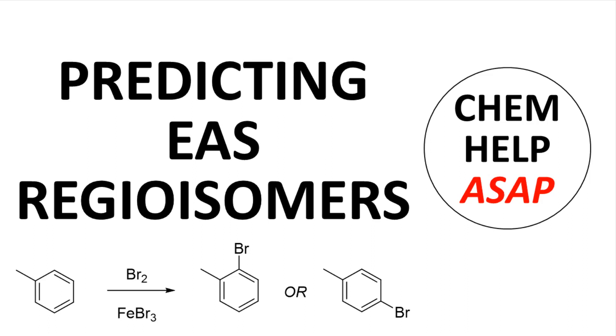Good day from ChemHelp ASAP. This video provides practice problems for predicting the regiochemical outcome of electrophilic aromatic substitution reactions. All of these problems have been pulled from the chemical literature. Citations are on the slides. Check the video description to find links to printable copies of these problems and their solutions.